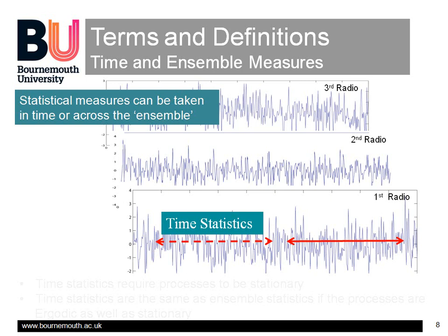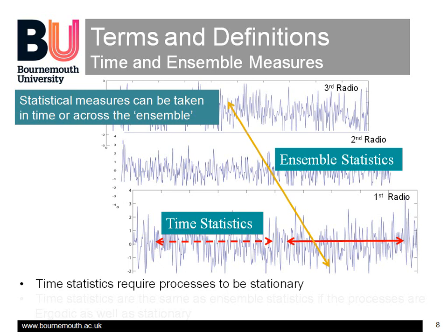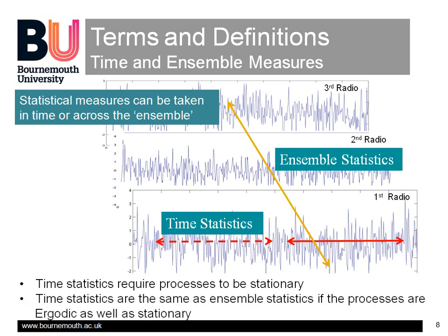That is, although the intensity of the signal varies from instant to instant, its average value, or whatever other statistical measure we are interested in, does not change. Alternatively, however, we could take an average at one particular time over the whole range of the radios, the whole ensemble of signals, as it is called. For this to give the same result, the statistics of all the radios must be both stationary and the same as each other. And then, these are described as ergodic processes. It is absolutely convenient for us to assume that our noisy signals are both stationary and ergodic, so that we can take representative statistics from a single record in the time domain.